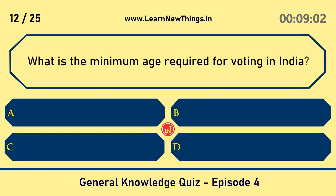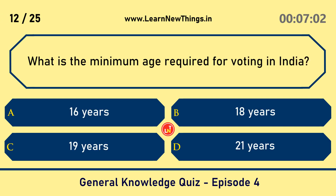What is the minimum age required for voting in India? 18 years.